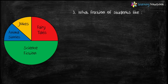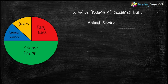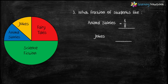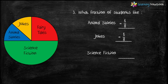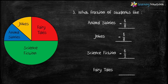Question three: what section of students like each type of book? Animal stories is represented by one-eighth of the circle, so one-eighth of students like animal stories. Jokes is also represented by one-eighth of the circle, so one-eighth of students like jokes. Science fiction is represented by half of the circle, so half of the students like science fiction. Fairy tales represents one-fourth of the circle, so one-fourth of students like fairy tales.